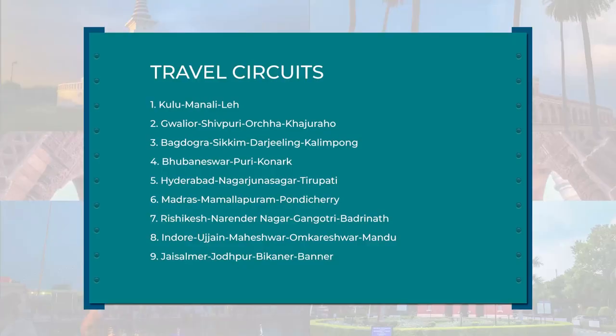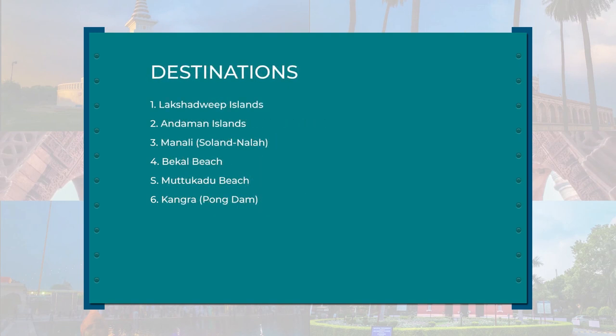For developing areas on a selective basis for integrated growth, special circuits and destinations would be taken up for intensive development. The government identified 15 circuits and destinations for concentrated development through central assistance, state government investment, and private sector. Some of the circuits listed include Kullu Manali Leh, Shivpuri, Orchha, Khajuraho, Hyderabad, Nagarjuna Sagar, Tirupati, Jaisalmer, Jodhpur, Bikaner, and Barmer, with destinations including Lakshadweep Islands, Bhakra Beach, and Kangra.